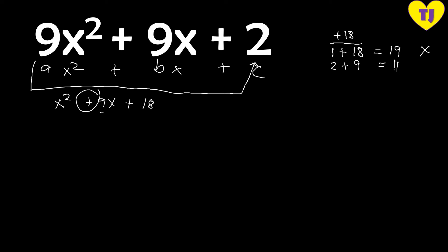Next, try 3: 18 is divisible by 3 because the sum of digits 1 and 8 equals 9, which is a multiple of 3. So 18 divided by 3 is 6, and 3 plus 6 equals 9 — that matches our middle term! So 3 and 6 are our factors.